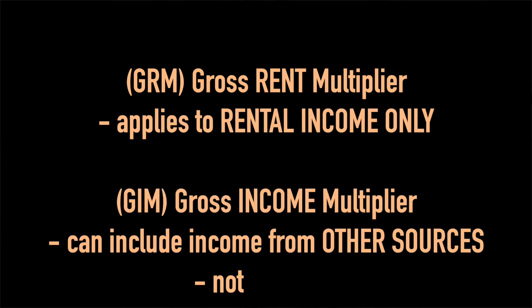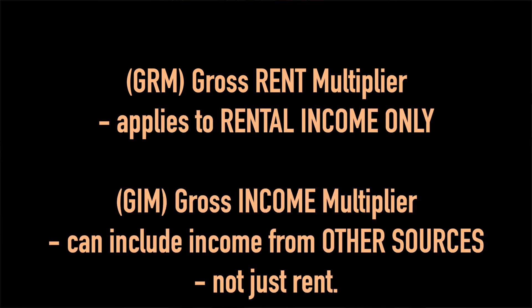So why is the gross rent multiplier easy to confuse with the gross income multiplier? Well, other than having very similar acronyms, the math looks similar to the untrained eye. The GIM, or gross income multiplier, is the selling price divided by the gross annual rent plus any other income that property is bringing in. For example, I stayed at a beach property where, along with rent, the owner was also selling her artwork — making additional income from that property. So she would be looking for the GIM, her gross income multiplier.